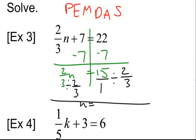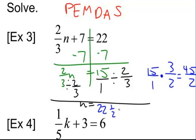So this becomes 15 over 1 times, keep change reciprocal, 3 over 2. So that would be 45 over 2. And that ends up being 22 and 1 half. So n is equal to 22 and 1 half.